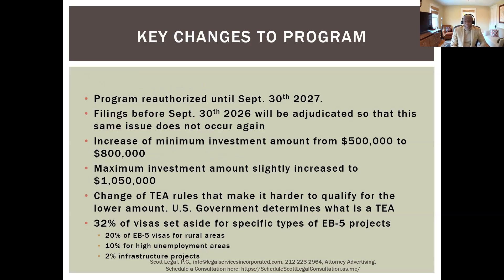The regional center program was reauthorized in March 2022 through September 30, 2027. Importantly, language was added stating that any petition filed before September 30, 2026 will be adjudicated. Previously, when the program froze, many people had applications pending that the government was unable to process, creating quite a bit of instability. This change ensures that the government will continue to adjudicate petitions regardless of whether the program is reauthorized.